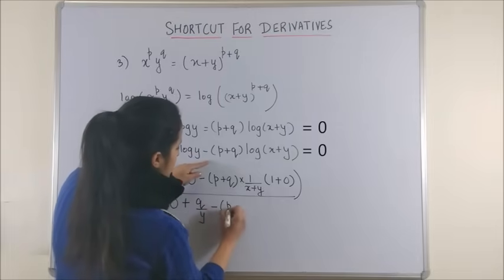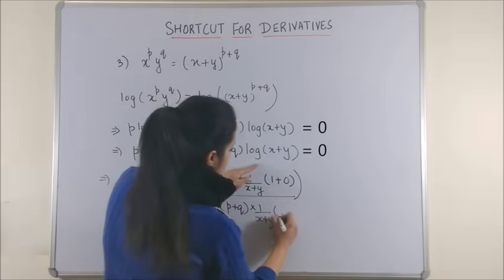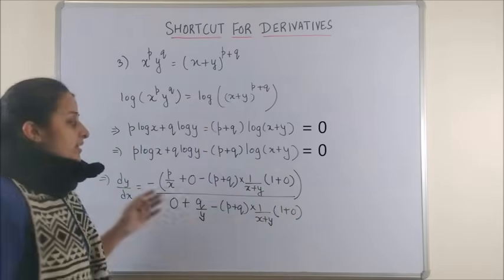Minus p plus q into 1 upon x plus y into, again, 1 plus 0.